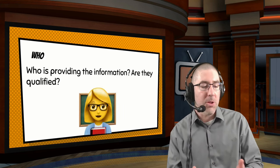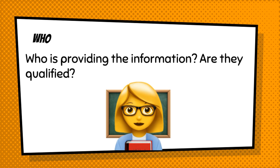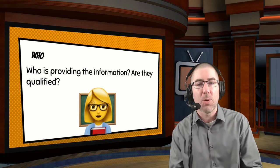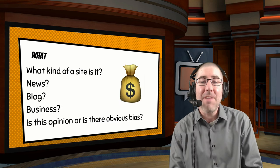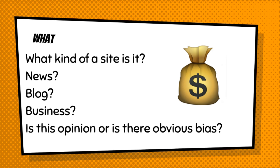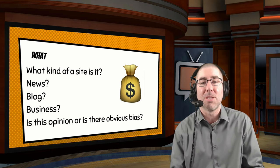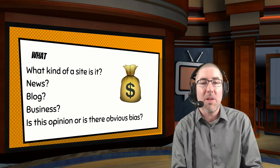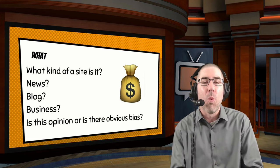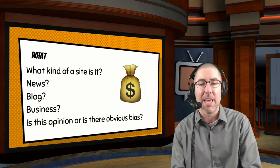Starting with 'who' — who's giving you the information? Are they qualified? Is it just somebody with a blog or a professional? Then 'what kind of site is it?' — a news site, a blog, a business site? Can they see it's somebody's opinion? Can they detect obvious bias? These are skills students need to develop as media consumers in all facets of their life.